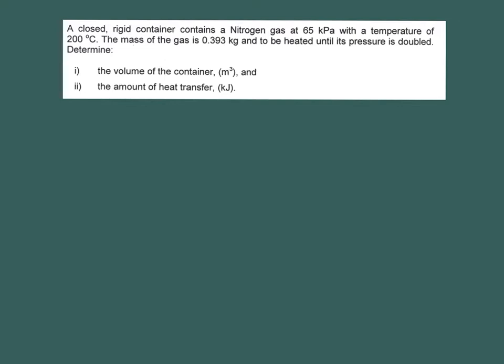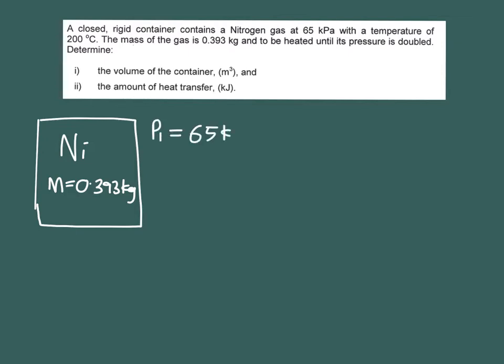So let's start with the schematic diagram. So we have a rigid container where inside this container you have a nitrogen gas with a mass of 0.393 and from state one right you have pressure one is equal to 65 kilopascal and temperature at 200 degrees C. And remember you need to change it into Kelvin right because this is an ideal gas.